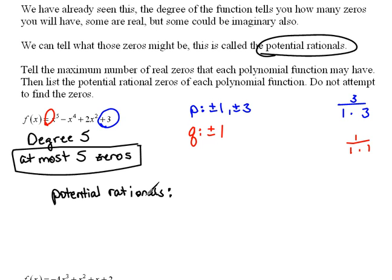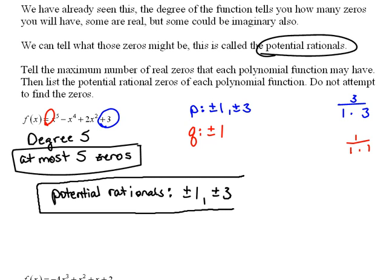Our potential rationals will be all of the combinations of the P's over the Q's. So the first one I'm going to start out with is the 1 and put that over the Q's. So 1 over 1 would be 1. Next would be the 3. 3 over 1 would be 3. So these are our possibilities of rational zeros.